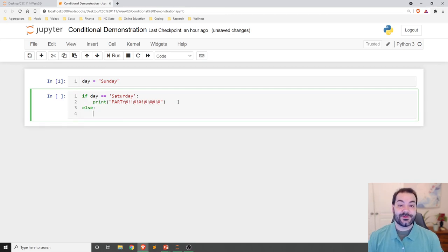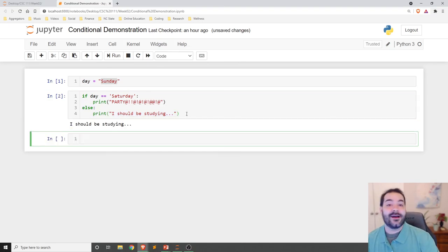Else, it's any day besides Saturday, including our day. Print, Sunday is a school night, so I should be studying. What we're doing here is we're going to do an evaluation. We're going to check, is my day equal to Saturday? If it is, print party. Otherwise, it is not Saturday. Day is not Saturday. Print, I should be studying. And if you're watching this video, you are studying, so good on you.